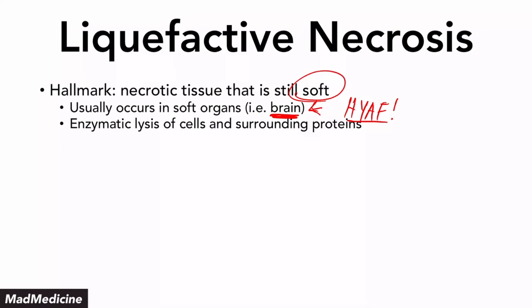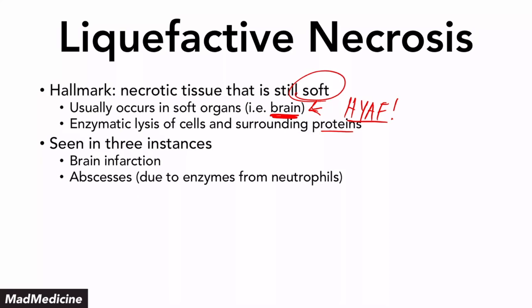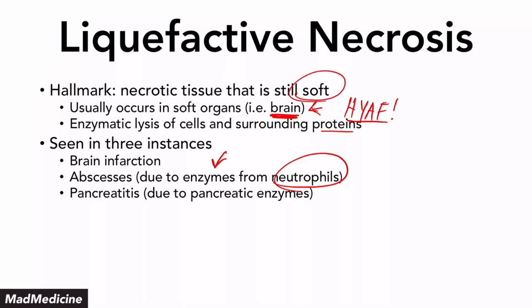What ends up happening in liquefactive necrosis is that enzyme lysis is going to occur, as well as destruction of the surrounding proteins. This is going to be seen in three main instances: number one, a brain infarct — if you have a stroke or some type of infarction happening in the brain, you're going to see liquefactive necrosis. Abscesses also cause liquefactive necrosis because of the enzymes that neutrophils release, which cause the surrounding architecture to break down with a soft consistency. And then finally, pancreatitis — pancreatic enzymes that break down proteins, fats, and lipids lead to liquefactive necrosis in the pancreas as well.